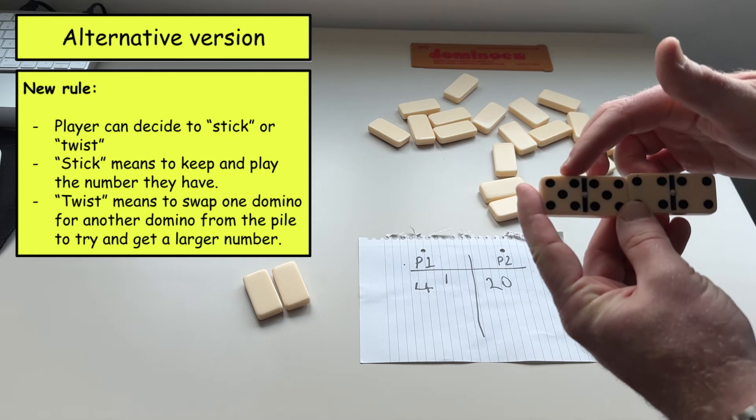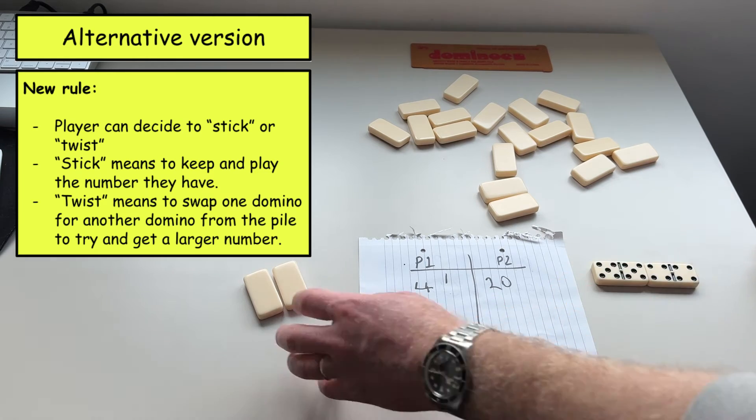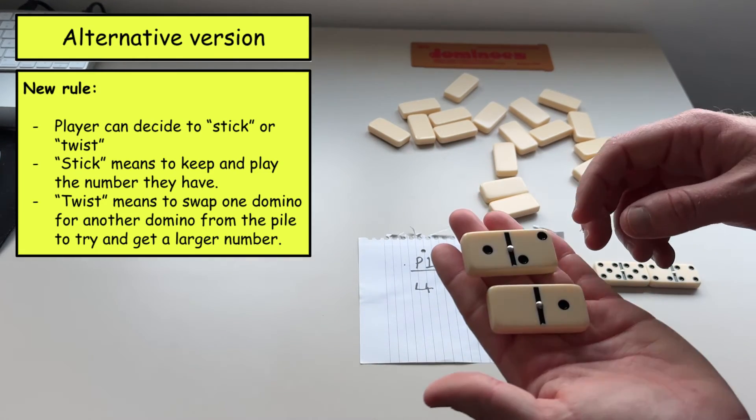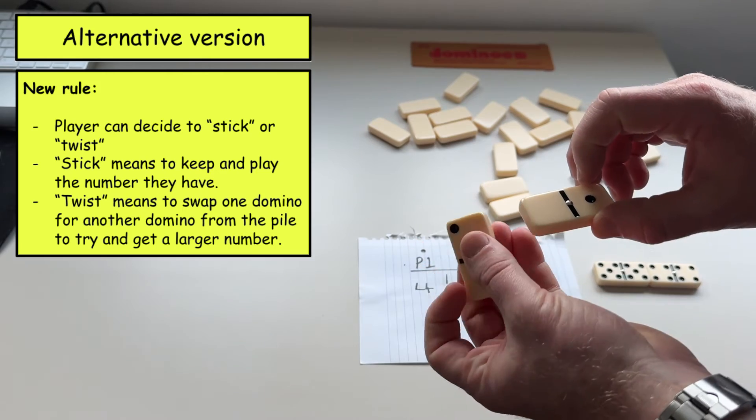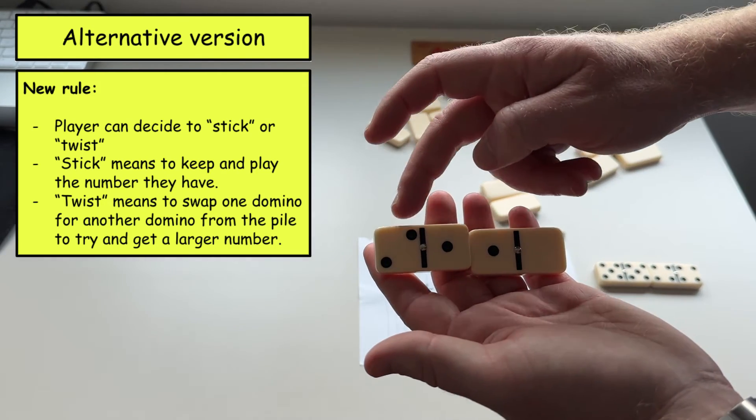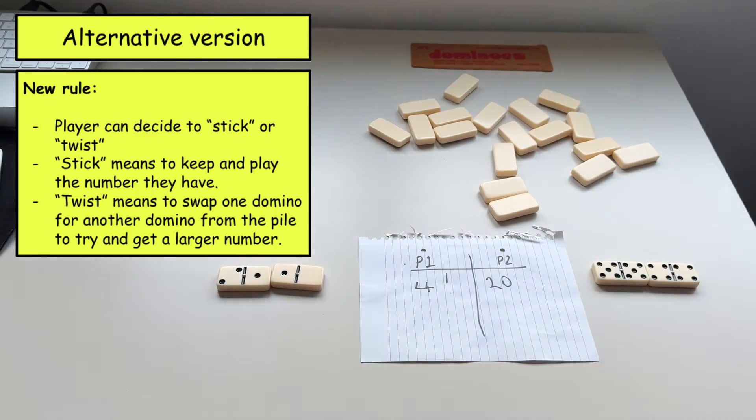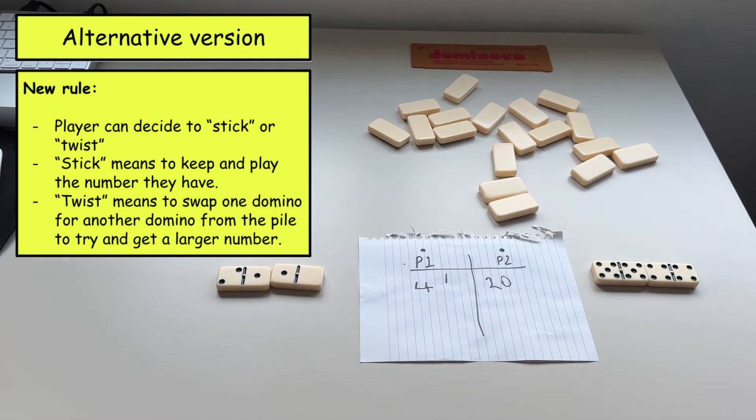So player two here has quite a good number. They have five thousand five hundred and forty four in their hand and player one has not a very good number. They have a really low number so the highest number that they can make is two thousand one hundred and ten.